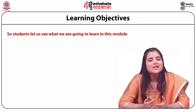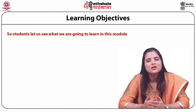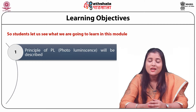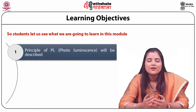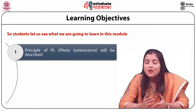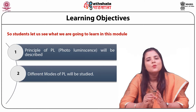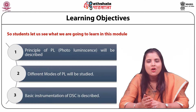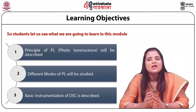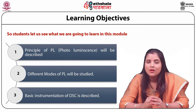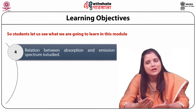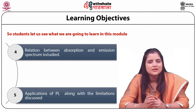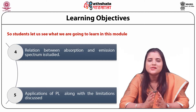Let us see what we are going to learn in this module. The principle of Photoluminescence (PL) will be described. Secondly, the different modes of Photoluminescence will be studied. Third, the basic instrumentation of Photoluminescence is described. Fourth, the relation between absorption and emission spectrum is studied. Finally, the applications of Photoluminescence along with the limitations are discussed.